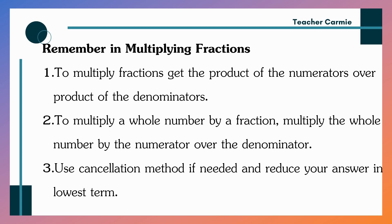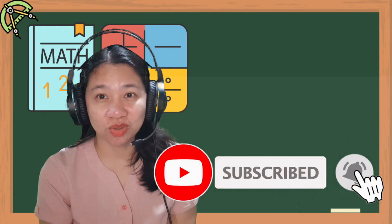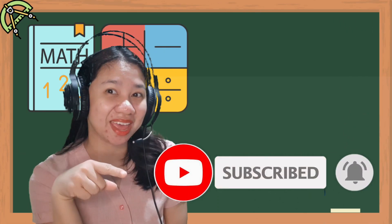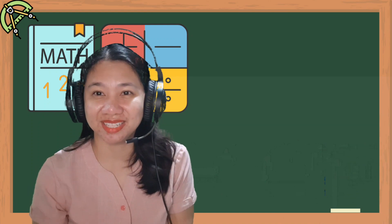Let us remember, in multiplying fractions, to multiply fractions, get the product of the numerators over the product of the denominators. To multiply a whole number by a fraction, multiply the whole number by the numerator over the denominator. Or, number 3, use cancellation method if needed and reduce your answer in the lowest term. Ako ang inyong teacher, Carmen. At ang inyong video, like and subscribe sa aking YouTube channel. Bye!